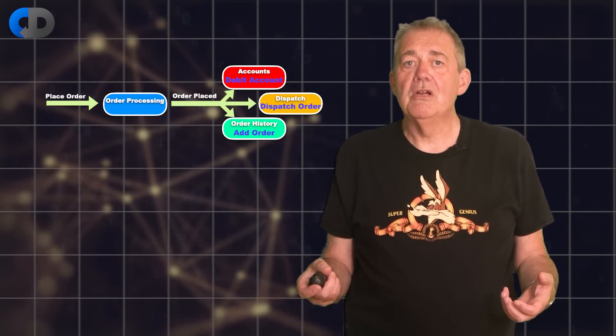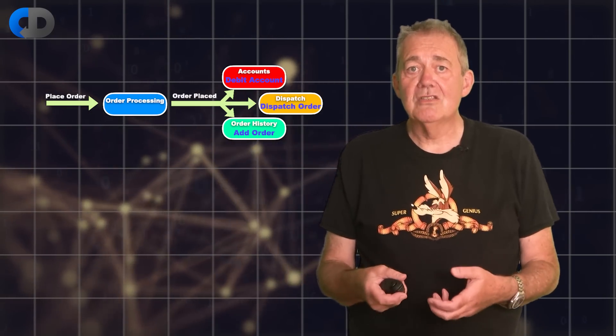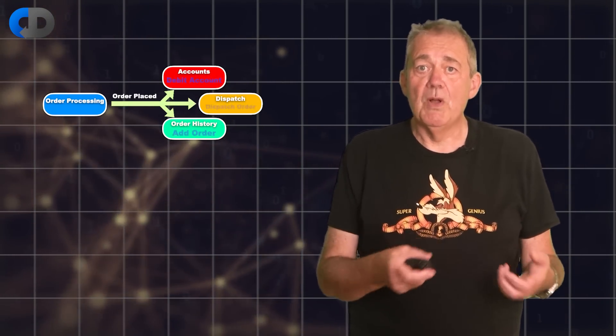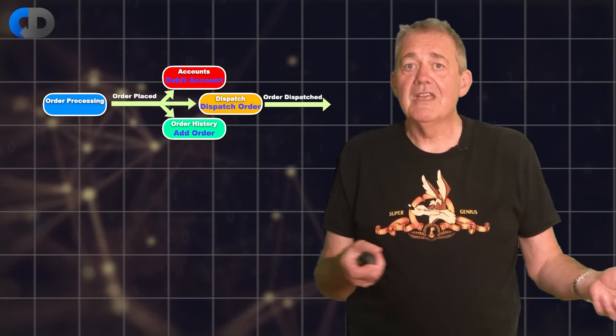This decouples programming and teams as well as software. Our new dispatch service may generate new messages of its own that nothing is interested in yet, but sometime later we could decide to add something new that responds to the order dispatched message and so grows the capability of the system further. This ability to grow the system in unforeseen ways is very powerful. This design approach isolates change better than any other, allowing systems to grow incrementally and in unplanned ways.